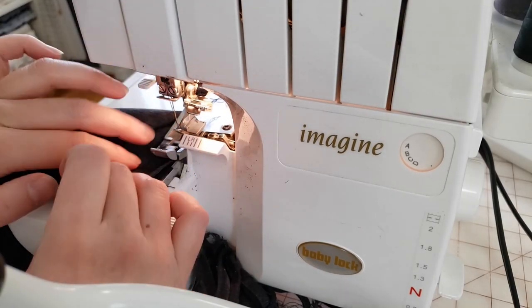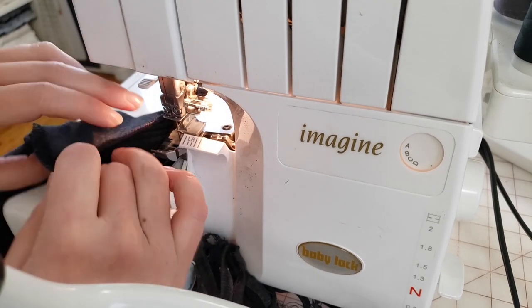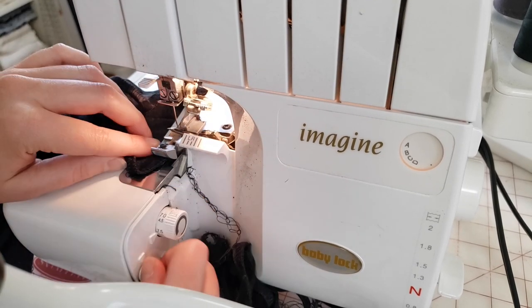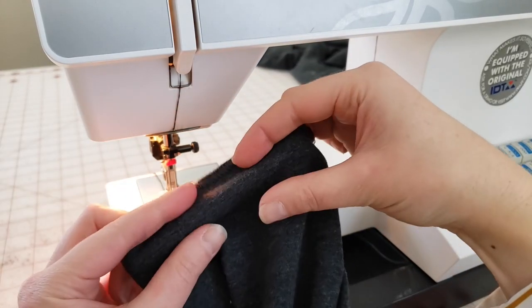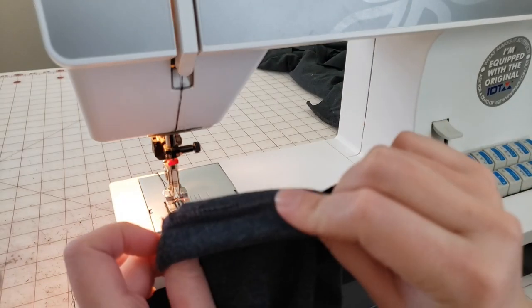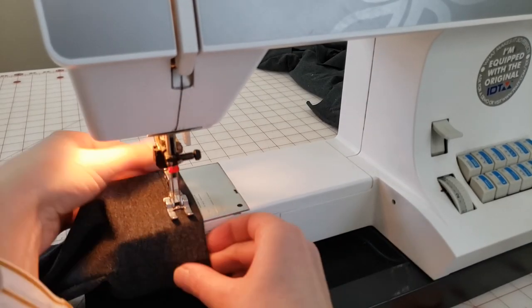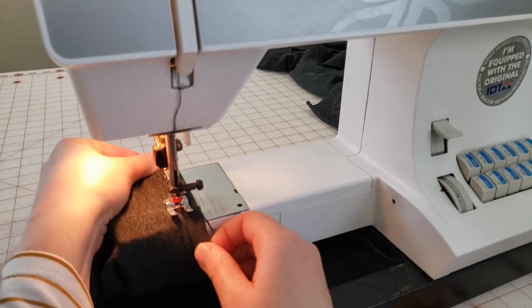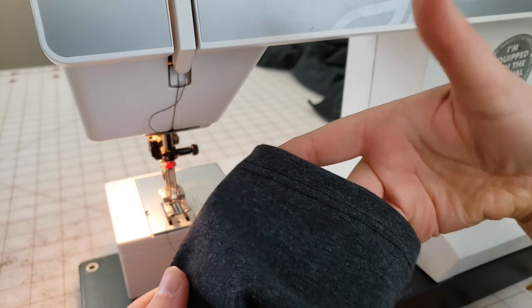The last step is to hem the ankles. I'm going to finish the edge by serging. You don't have to do this, but I think it just makes a really nice neat edge. If you have a cover stitch machine, this will actually be a lot easier. Once I get that serged, I'm just going to flip that edge toward the interior. I'm again going to use my twin needle to stitch all the way around the ankle. You could use a zigzag stitch for this if you'd like.